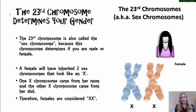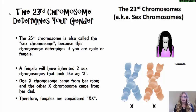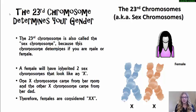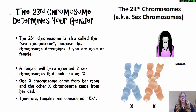A female is XX. What this means is that for the 23rd chromosome, the female would have inherited two sex chromosomes that look like an X, as you see here. One X chromosome must have come from her mother, and the other X chromosome came from her father. So females are XX.